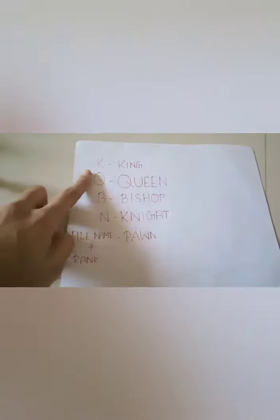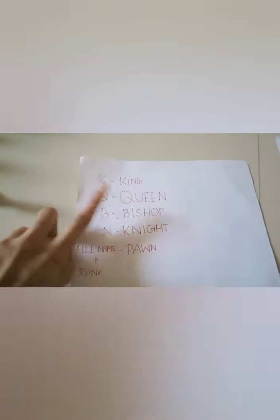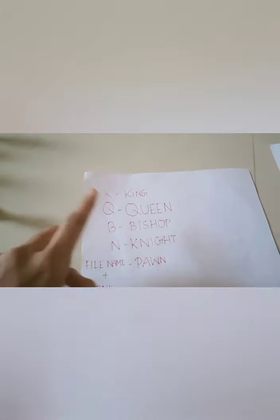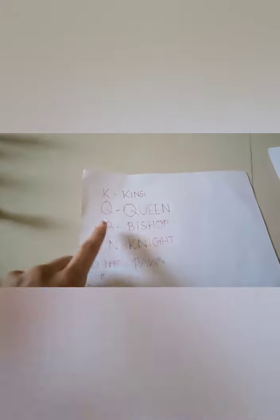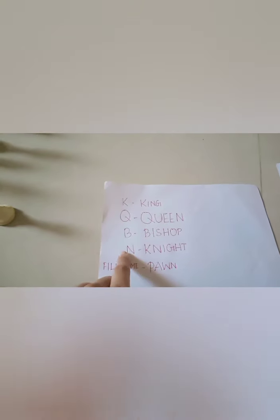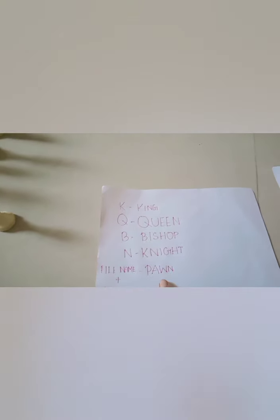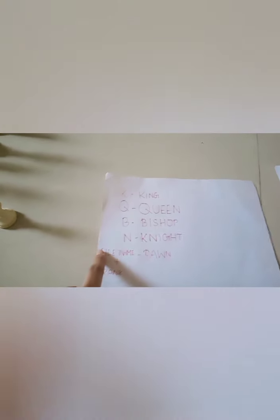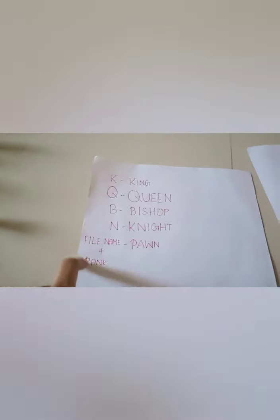So for king: K, queen: Q, bishop: B, knight: N. For pawn, file name plus rank.